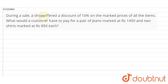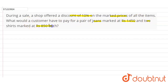During a sale, a shop offered a discount of 10 percent on the marked price of all items. What would the customer have to pay for a pair of jeans marked at rupees 1450 and two shirts marked at rupees 850 each? So, the marked price of jeans is rupees 1450.